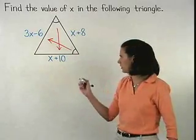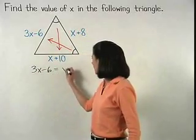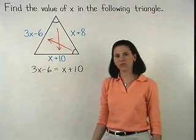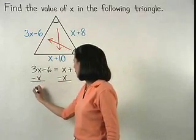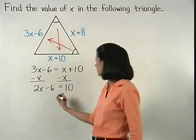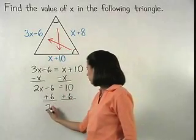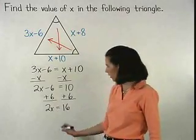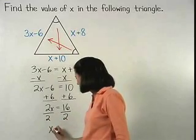So we can set up the equation 3x minus 6 equals x plus 10. Solving from here, we first subtract x from both sides to get 2x minus 6 equals 10. And adding 6 to both sides gives us 2x equals 16. And dividing both sides by 2, we find that x equals 8.